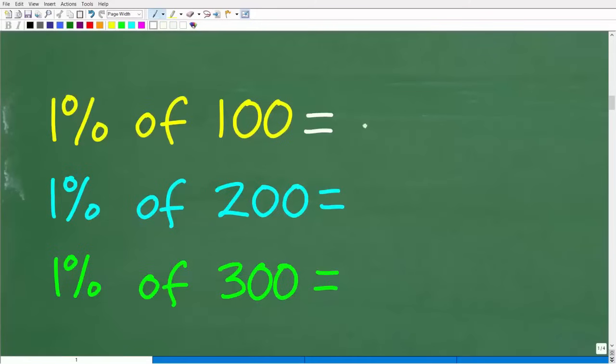1% of 100 is what? Well, hopefully all of you are saying, that would just be 1, right? So if we had 100 pennies and I wanted 1% of 100 pennies, it would be 1 penny.